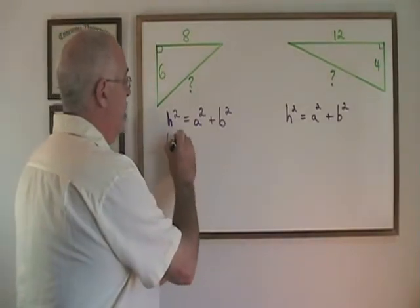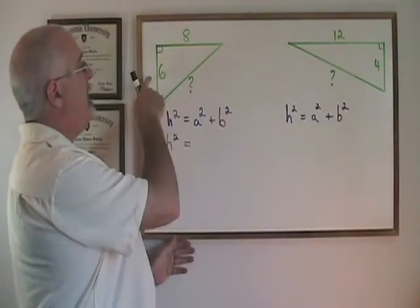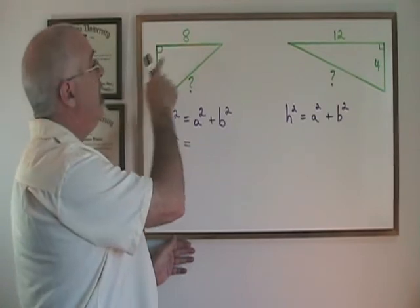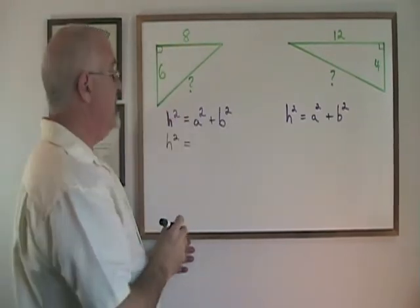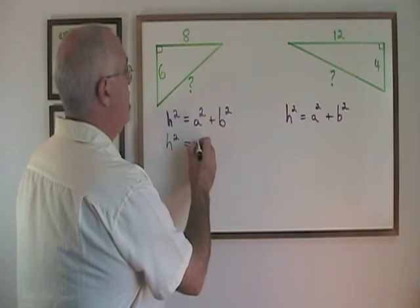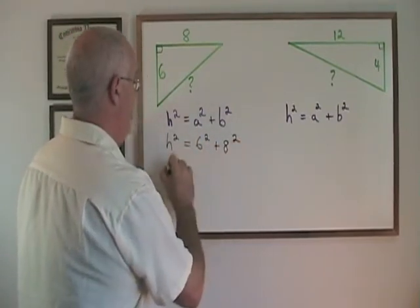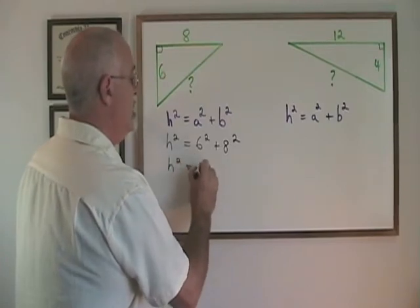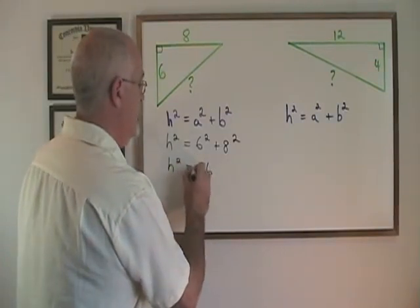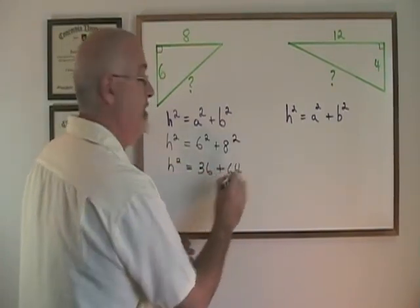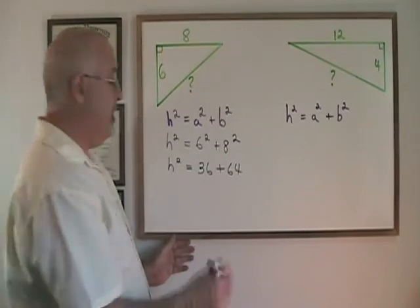h squared, in this case, if I say a is the side that is 6 units in length, and b is the side that is 8 units in length, h squared is equal to 6 squared plus 8 squared, which is 36 plus 64, and 36 plus 64 is equal to 100.